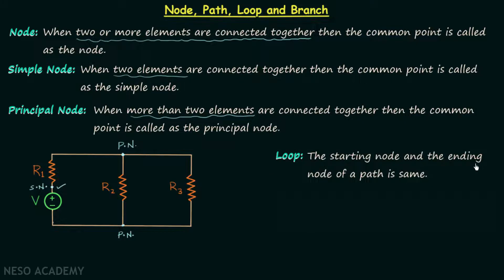A loop is also a path, but in this path the starting node and the ending node are the same. For example, we start from this simple node, move through R1 to this principal node, then through R2 to this principal node, then through the voltage source and back to the simple node where we started — that is a loop. Another example: starting from this principal node, moving through R3 to this principal node, then through R2 back to the original node — that is another loop.